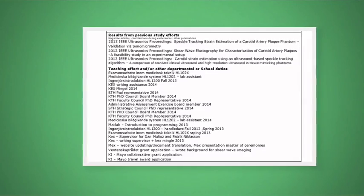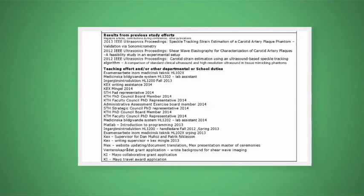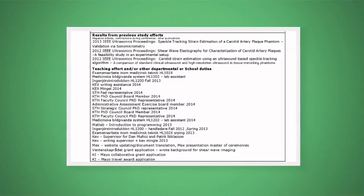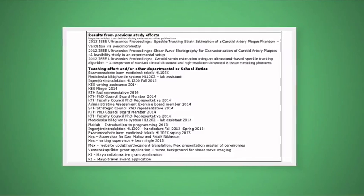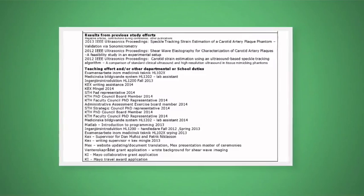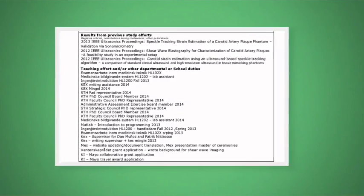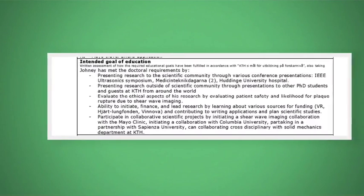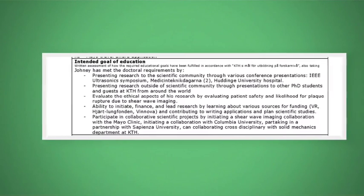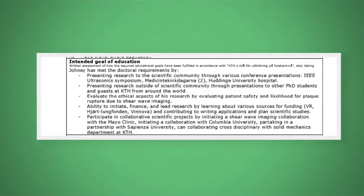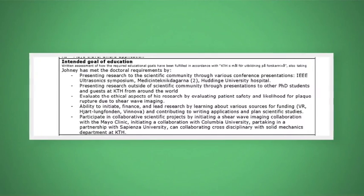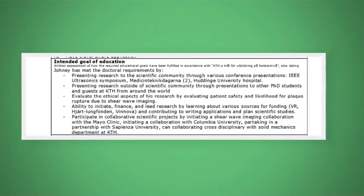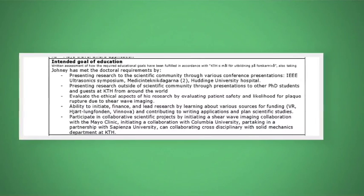The results from previous study efforts section should contain your research results, like articles, manuscripts, posters, conference presentations, etc. I also recommend listing your departmental duties. You can think of it as a history of what you've accomplished at KTH so far. There are certain goals and soft skills you should learn as a PhD student. List these goals in the intended goal of education section. Furthermore, these goals should go hand in hand with the outlined goals of PhD education provided by KTH.